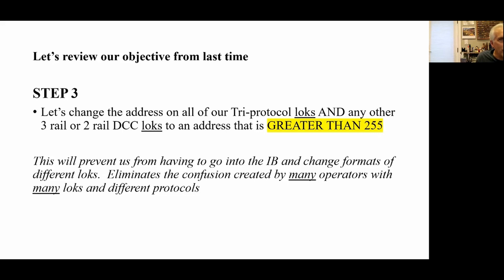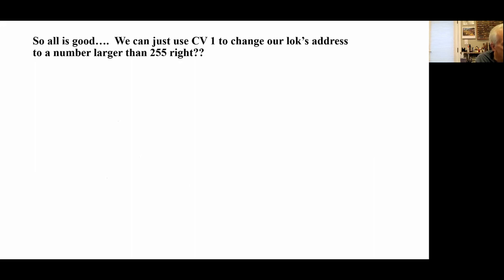Now let's talk about what we're really here to talk about. Our objective from last week's presentation — the whole culmination was that we need to take our tri-protocol and DCC locs and make the address on those greater than 255. The reason we want to do that is so we don't have to keep going back into the IntelliBox and changing formats from Marklin Motorola to DCC. It eliminates all that confusion with many operators controlling the same system. So how do we go in and change our address to something larger than 255?